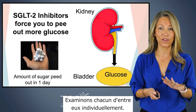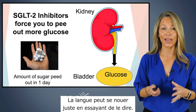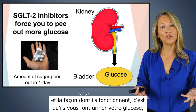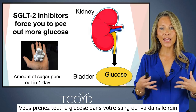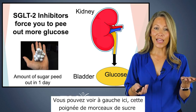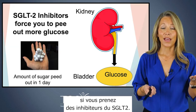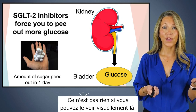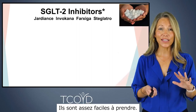SGLT2 inhibitors — that is a mouthful to say. This class of medications works by making you pee out your glucose, your blood sugar. The glucose that's in your blood goes through the kidney and out into the urine. This hand of sugar cubes shown here represents about how much glucose you pee out every day when taking SGLT2 inhibitors — quite a bit visually. These medications are once-a-day pills, which is one of the nicest things about them. They're pretty easy to take.